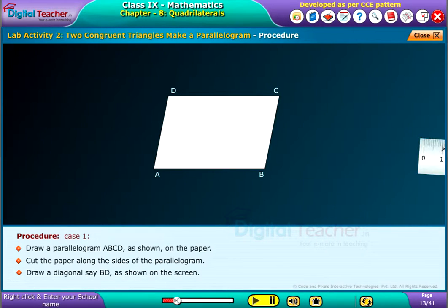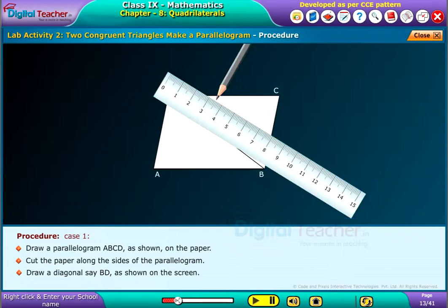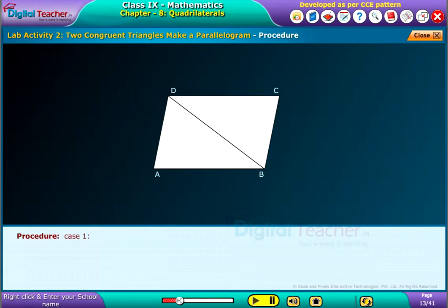Draw a diagonal, say BD, as shown on the screen. Now, cut the parallelogram along its diagonal using the scissors.